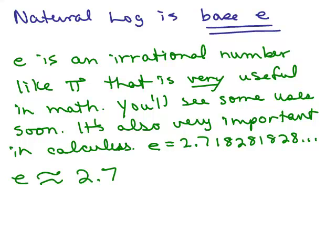The other special log is log base e. First of all, what's e? You may not have heard of that before. E is an irrational number like pi that is very useful in math, and you'll see some uses soon. It's also very important in calculus. E is 2.718281828, it does not repeat, even though you see 1828 twice in a row. So it's approximately 2.7, just like we memorize pi as approximately 3.14.